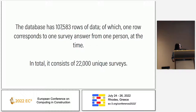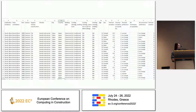At the moment, it has over 100,000 rows of data from 22,000 unique surveys, where every row basically means one person answering one survey at some point in time. There is also an interface where you can query some data, but you can also download the whole thing and go through it.